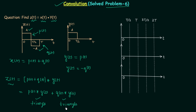Let's focus on P(t) convolved with Y(t) and plot its waveform. We know we are going to get a triangle, and the range in which our triangle will exist is from 0 plus 0, which is 0, to T/2 plus T/2, which equals T. So our triangle will exist from 0 to T.